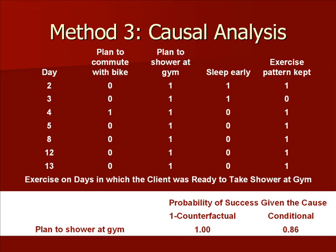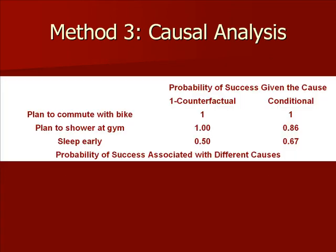If we reduce the days further to any day in which no other reasons for exercise are present, then we are down to four days — days five, eight, twelve, and thirteen. On these four days, exercise occurs every day. This data shows the calculated probability of exercise given various causes. The plan to commute by biking to work leads to exercise every time it is present. The plan to shower at the gym leads to exercise between 86 and 100 percent of the time. Sleeping early does not have as big an impact.